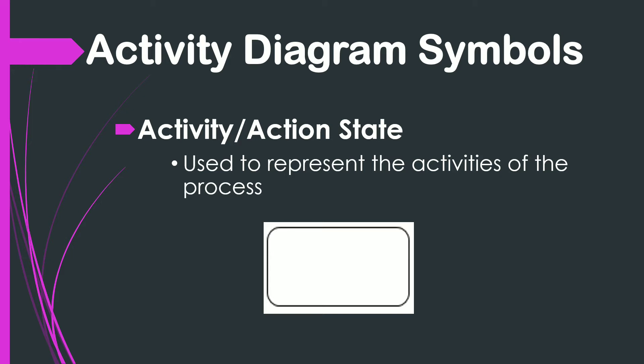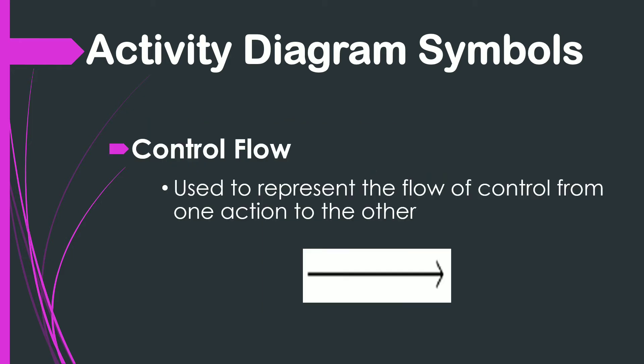The next one is the control flow. It connects two states or two actions to depict the flow. It shows the sequence of execution and also known as paths. One action state can have multiple control flows input and output to another action state. A single-headed arrow is used to depict the control flow.